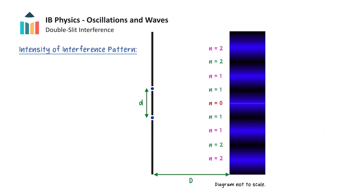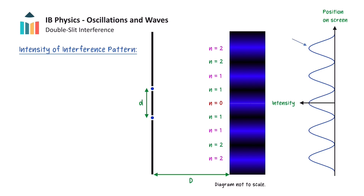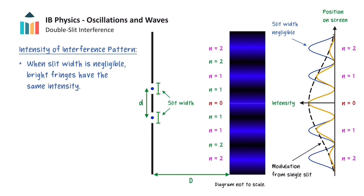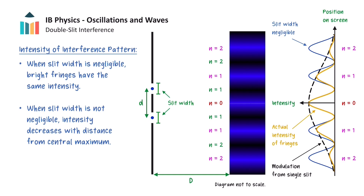Finally, we will briefly discuss the intensity of the fringes that arise from the interference pattern. The blue line shows how the intensity of the fringes varies with position on the screen. When the width of the slits is negligible, all the bright fringes have the same intensity. In actuality, when the slit width is no longer negligible, there is an intensity variation that occurs from single slit interference when the waves pass through each slit, and this ends up modulating the intensity of the fringes as shown by the dotted black line. The yellow curve represents the intensity observed on the screen when the width of the slits is taken into account, but this will be discussed in a later video.